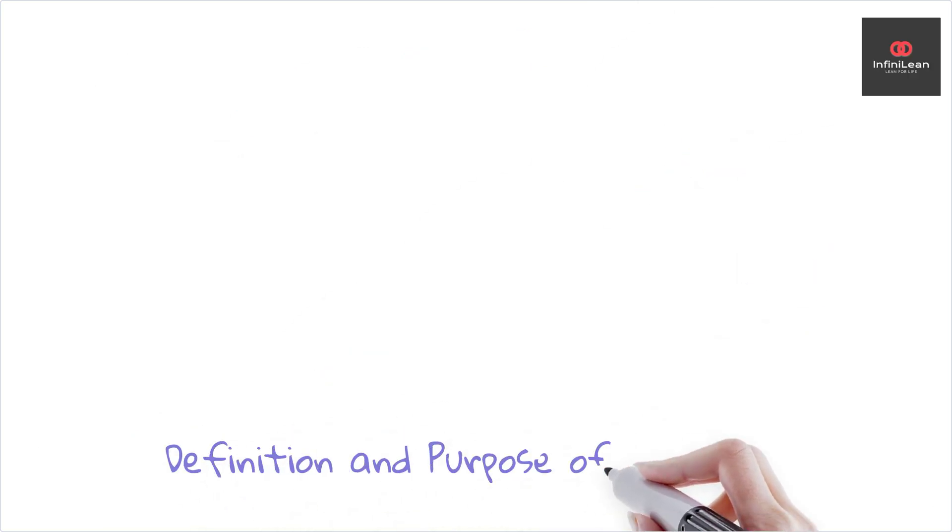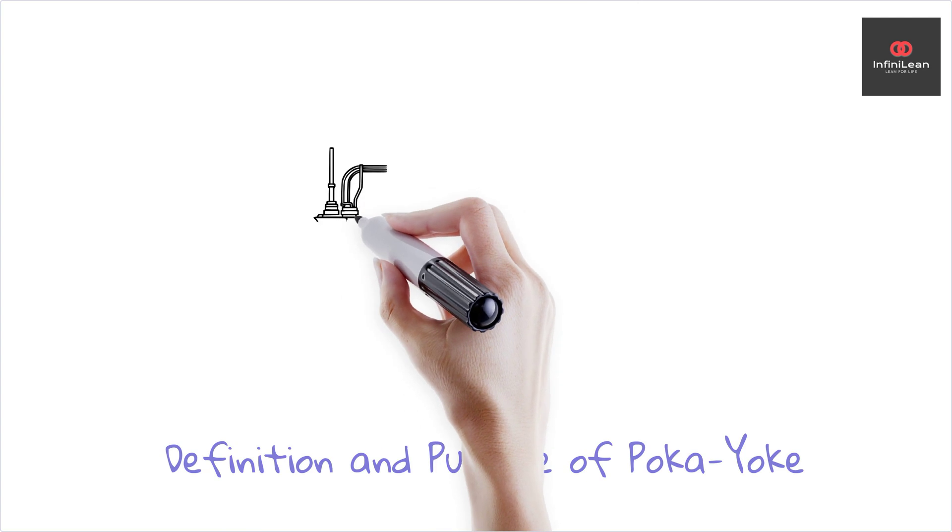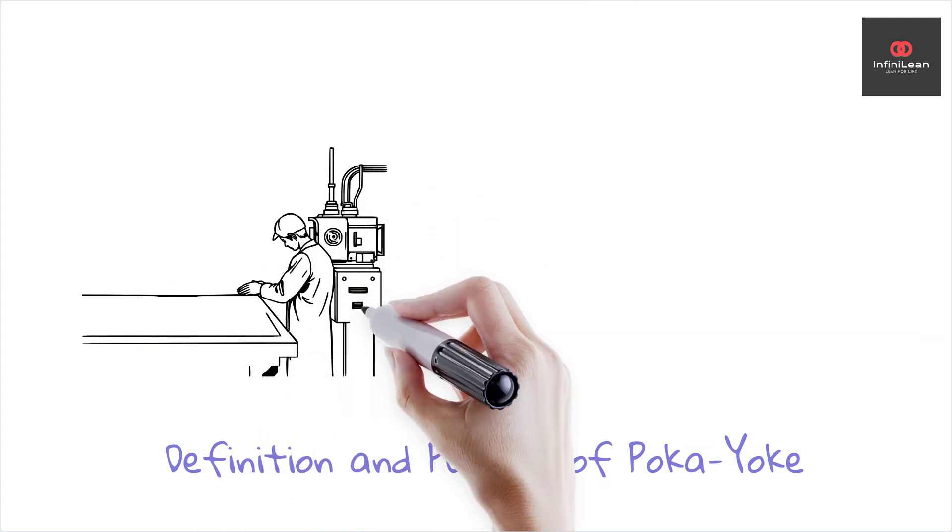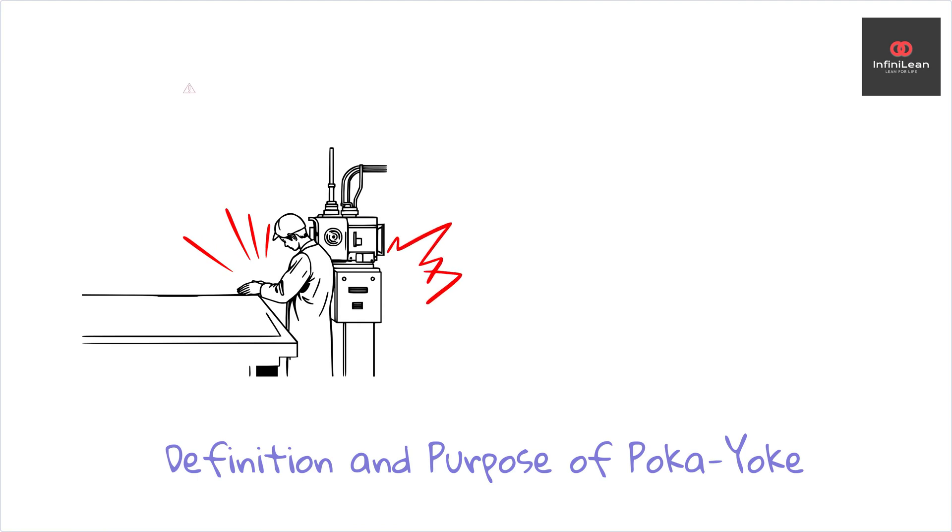Poka-yoke is a Japanese term that means mistake proofing. This simple yet powerful technique aims to eliminate human errors by preventing them from occurring or by making them immediately evident.